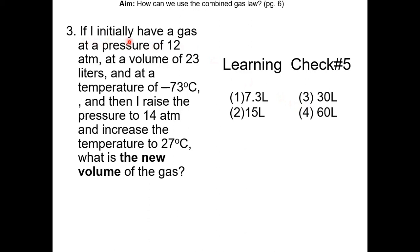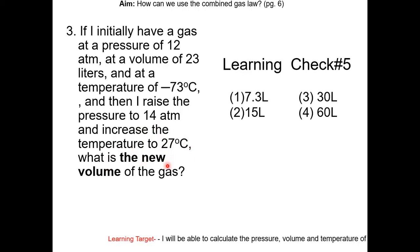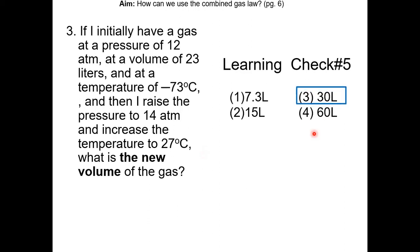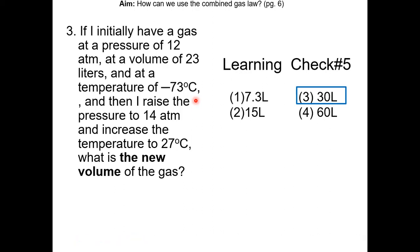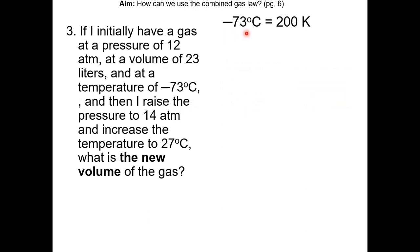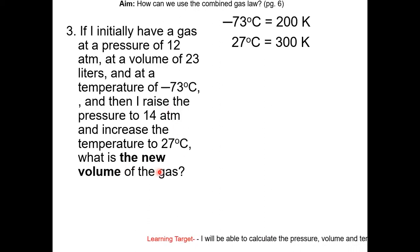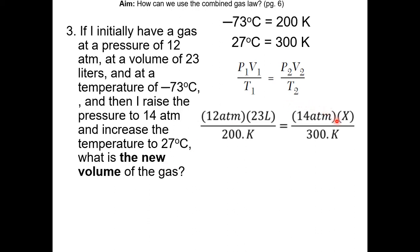Question 3: A gas is initially at 12 atm, 23 liters, and minus 73 degrees Celsius. The pressure is raised to 14 atm and the temperature is increased to 27 degrees Celsius. What is the new volume? Be careful — you must first convert Celsius to Kelvin. Minus 73°C equals 200 Kelvin; 27°C equals 300 Kelvin. We cannot use Celsius in gas laws because it is not the absolute scale. Plug pressure, volume, and temperature into the combined gas law, solve for x: the new volume is 30 liters.